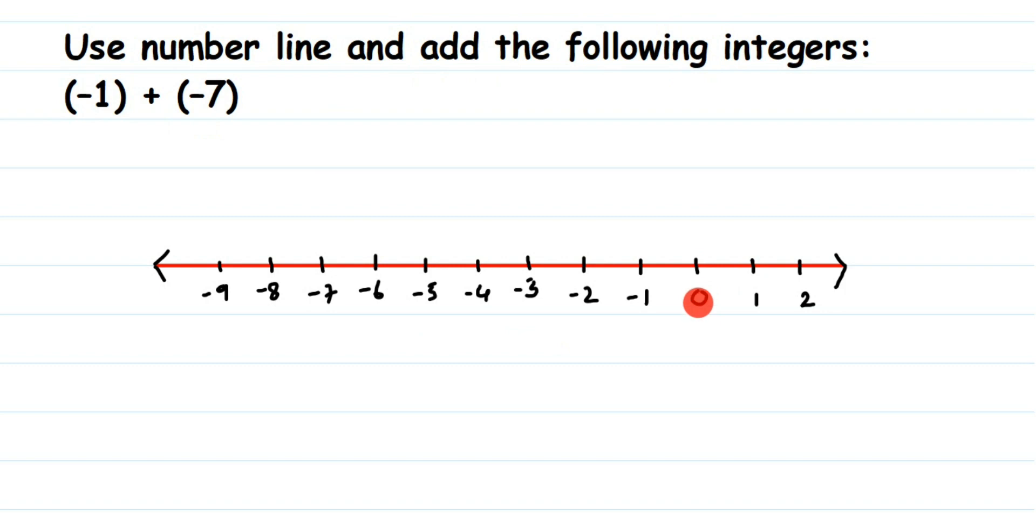I've taken it here because I have minus 1 and minus 7, both are negative integers. So I've taken more negative integers here rather than positive numbers. On the right side of zero we have positive integers, and on the left side we have negative integers.